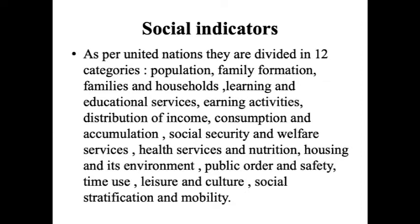Social indicators, as per the United Nations, are divided into twelve categories: population; family formation, families and households; learning and educational services; earning activities; distribution of income, consumption and accumulation; social security; welfare services; health services; nutrition; housing; environment; public order, safety, time, leisure and culture; and social stratification and mobility.